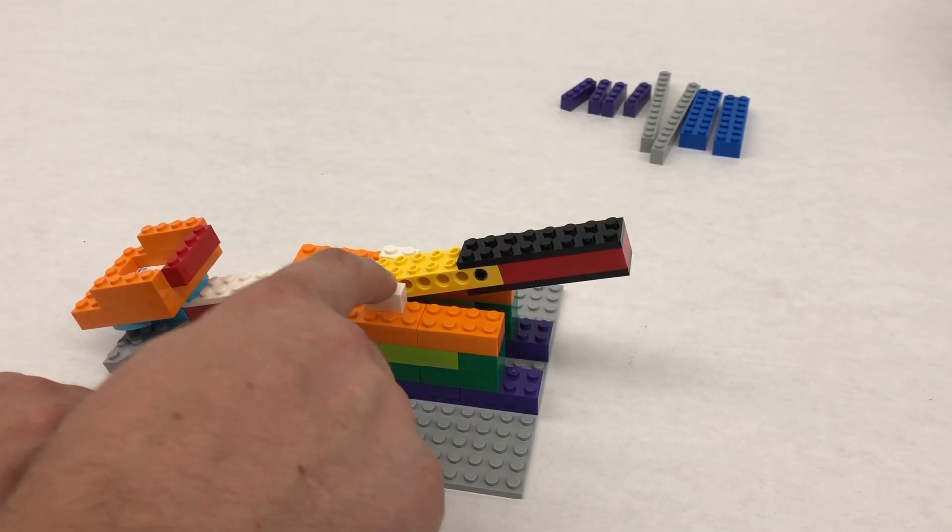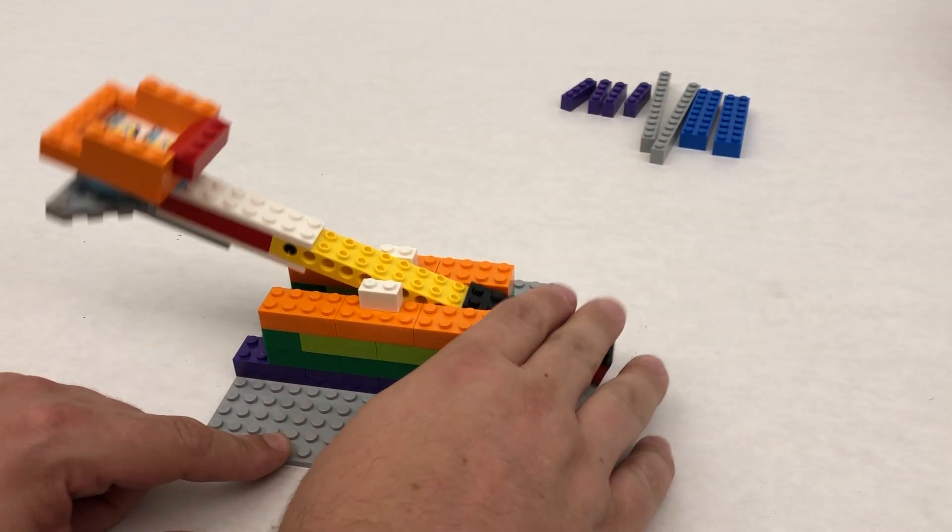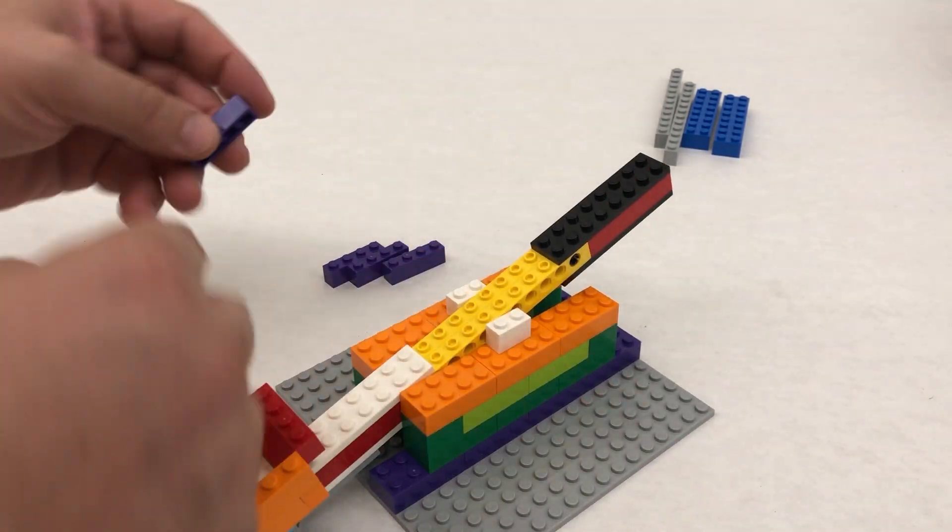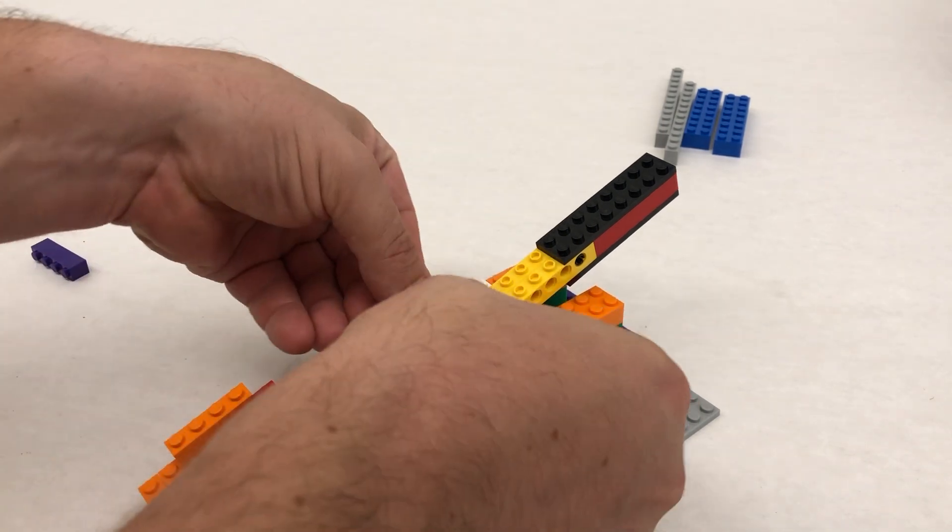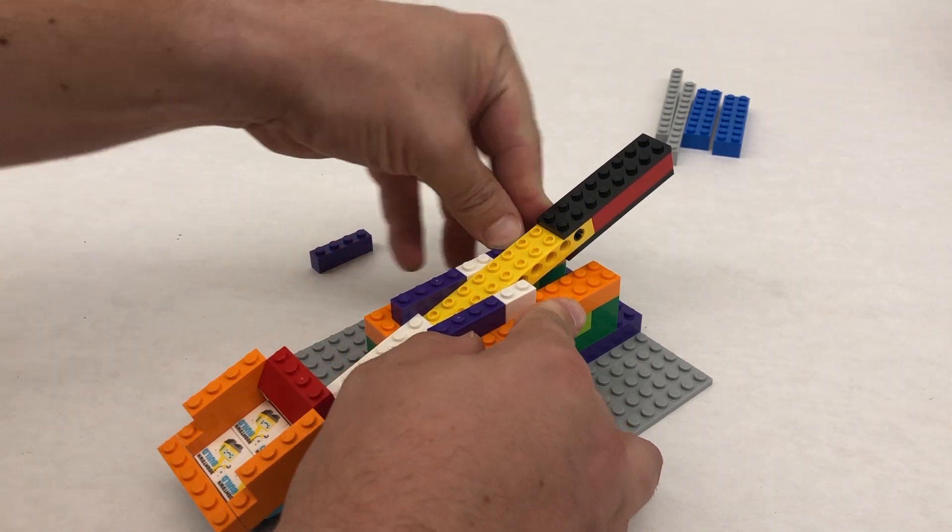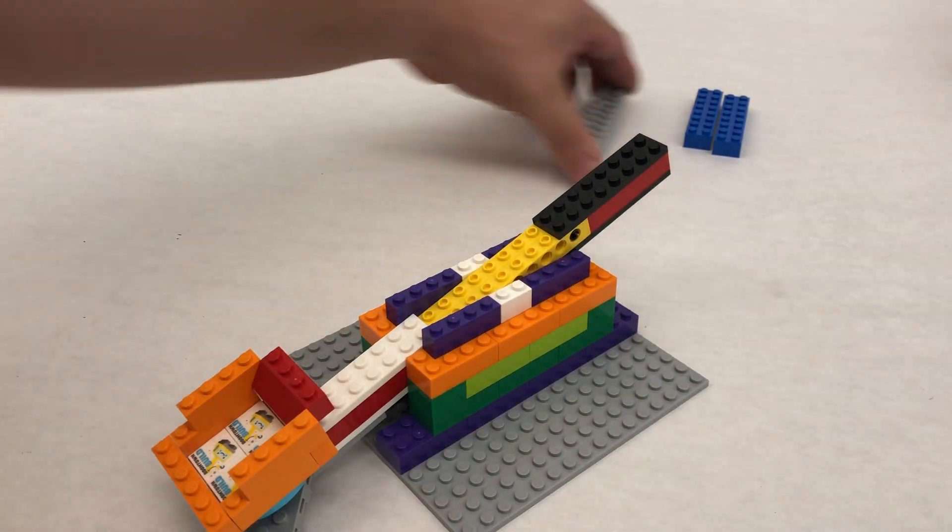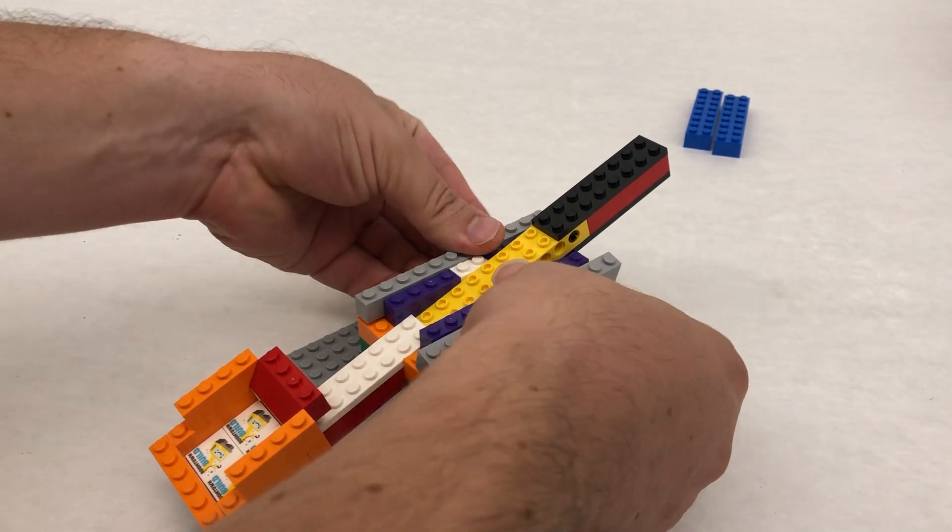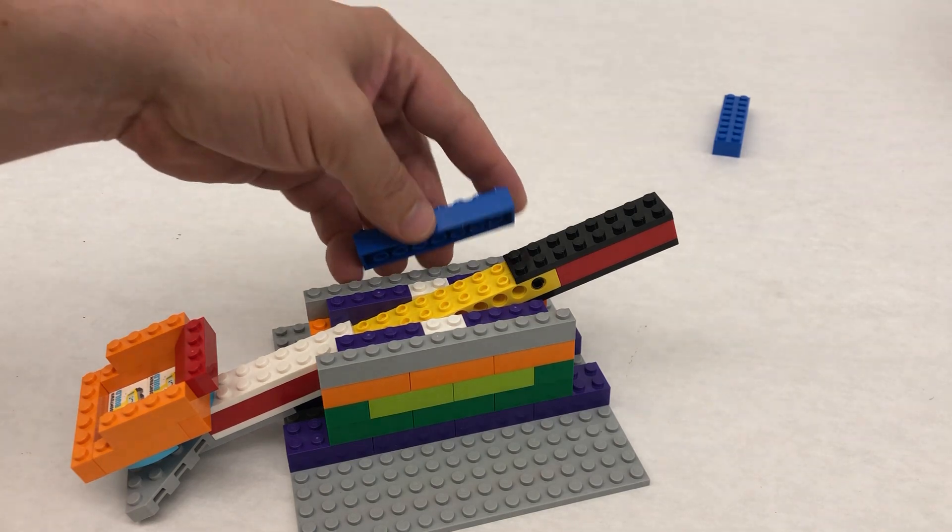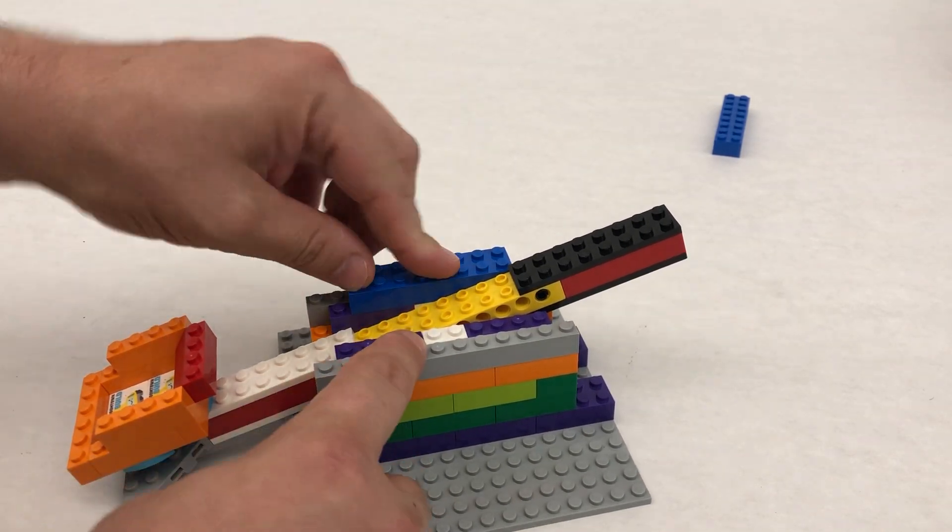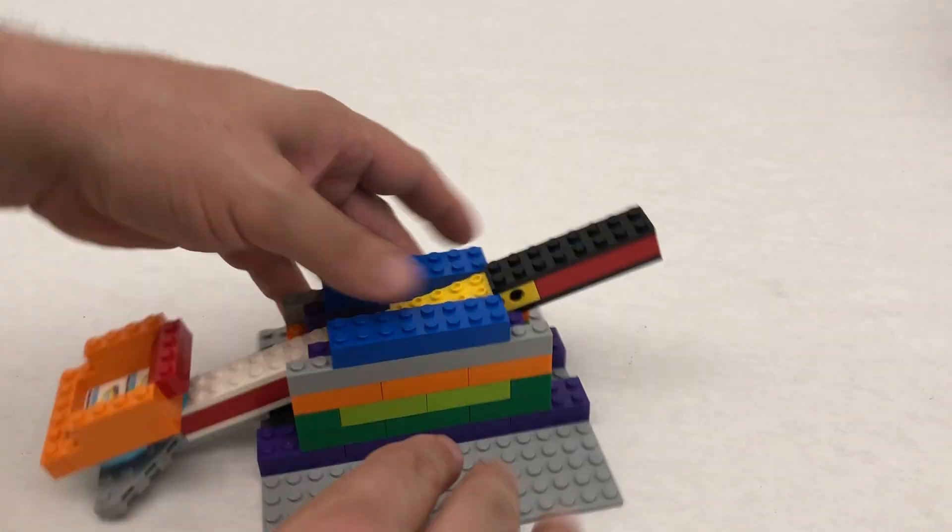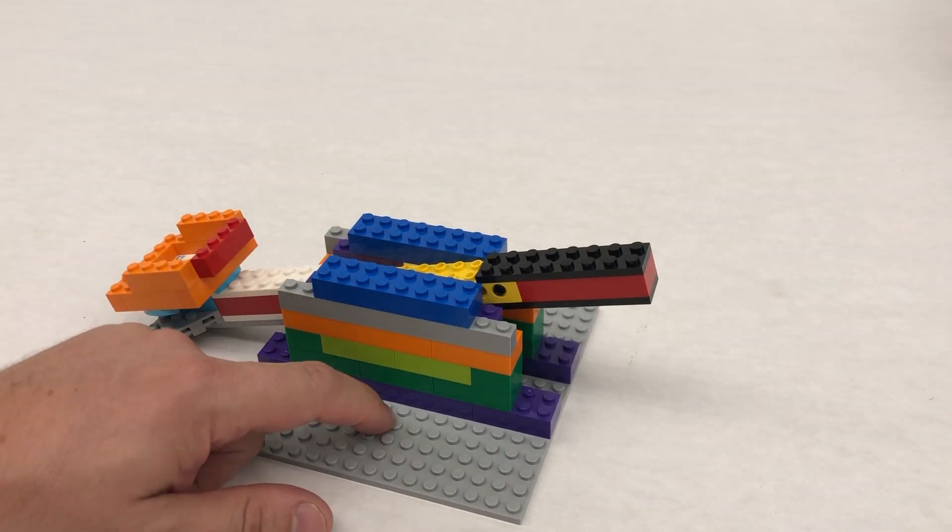The last part is just gonna secure these pieces down so when I hit it, it doesn't pop up and out of the build. So we're gonna take our one-by-fours and we're gonna go on either end of these pieces. And then these blue ones just sit in the middle just to kind of cover everything up so it's nice and secure, nothing's going anywhere.